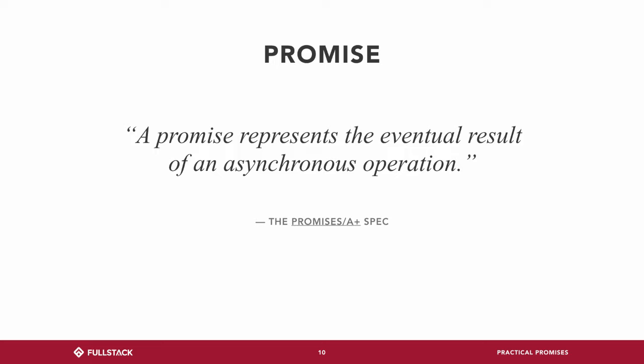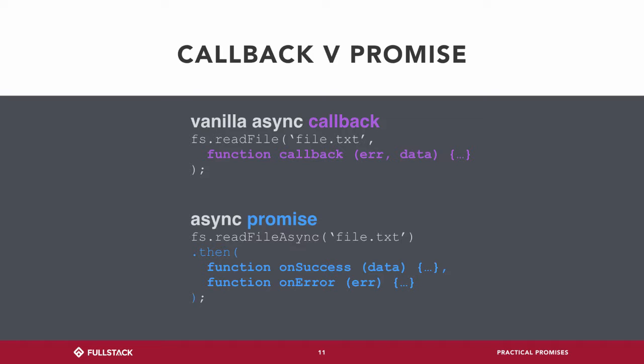What the promise represents is the eventual result of an asynchronous operation. Think about the promise created to read a file — it's eventually going to get read. How do we get the eventual result? A promise has that very important method called then. If we had some asynchronous method to read a file that returned a promise, one way we could deal with that is by passing in two functions to then: if you were successful, call the success one; if not, call the error one.